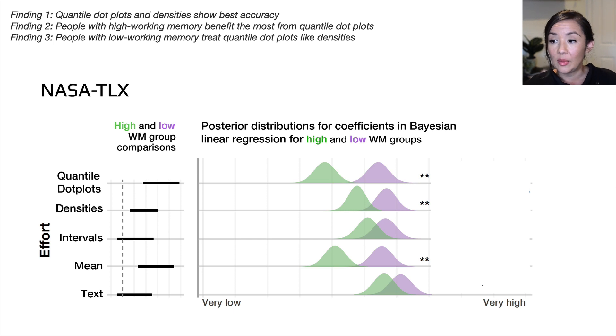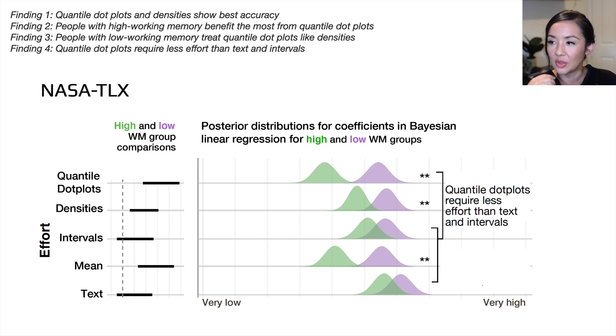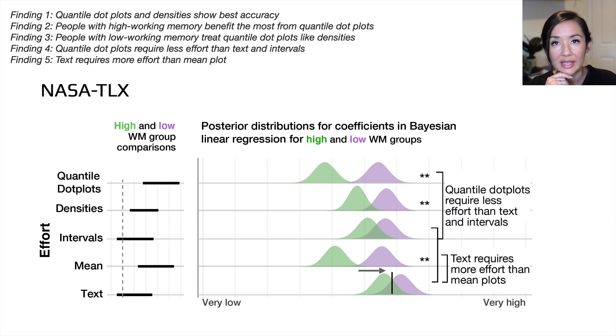The next data that we have is from the NASA TLX, and I'm just going to focus on effort here. The first finding from this analysis is that quantile dot plots require less effort than text and intervals. That's on average. So if we take the average of quantile dot plots, people are reporting that they require less effort than when doing intervals or text. That's really interesting. Quantile dot plots both evoke the best accuracy and people report having less effort when they use those visualizations. The next finding is that the text actually requires more effort than the mean plot, which I found interesting. On average, across both groups, people are reporting greater effort with text than the mean.